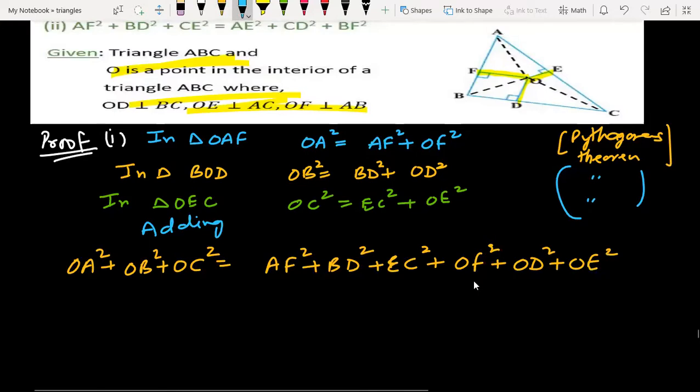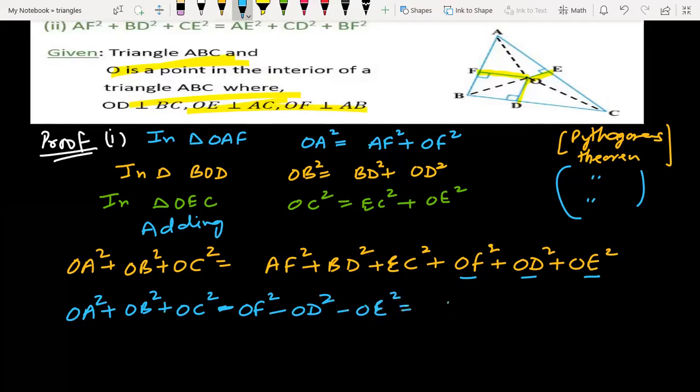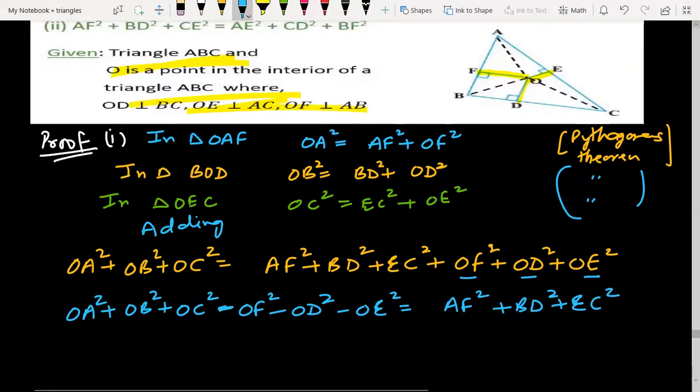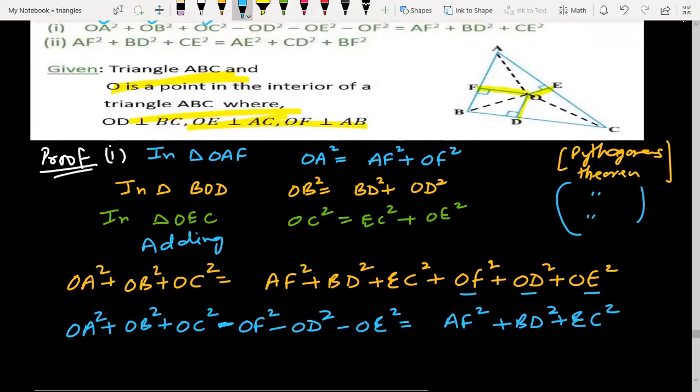We will take these three terms to left hand side. So OA square plus OB square plus OC square minus OF square, OD square, OE square equal to AF square plus BD square plus EC square. This is what we had to prove. First part is proved.